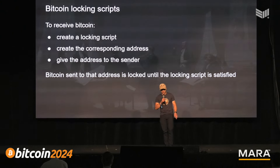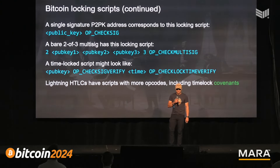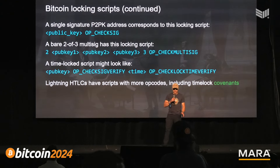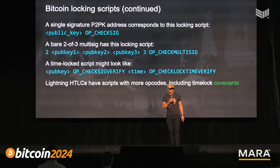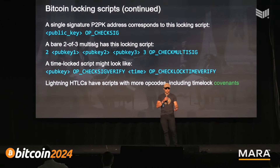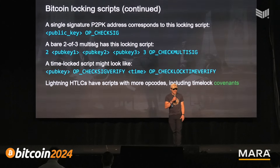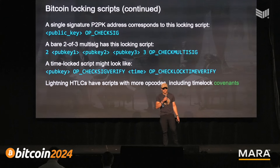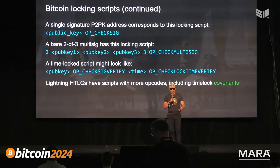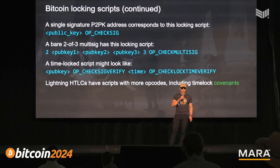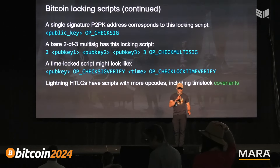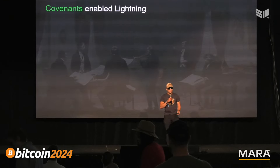Here's how that looks. If you have a single signature pay-to-pubkey, the original kind of Bitcoin address, it's a public key and an OP_CHECKSIG. If you have a multisig, it's three public keys with some numbers around it and a CHECKMULTISIG. Timelocks look like that, and then lightning HTLCs are just another script with more opcodes including those timelock covenants. So everything in Bitcoin is based on scripts.